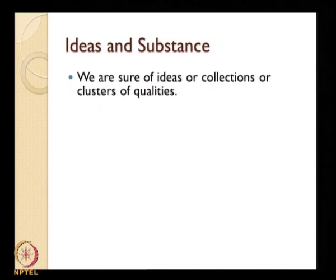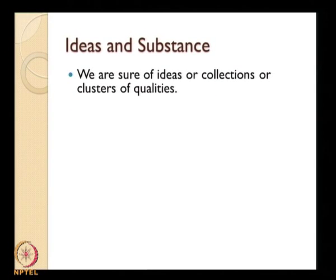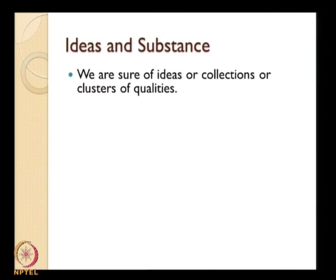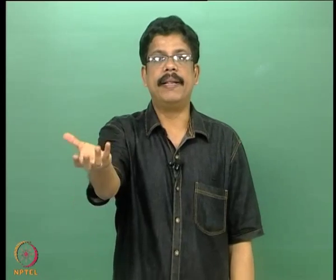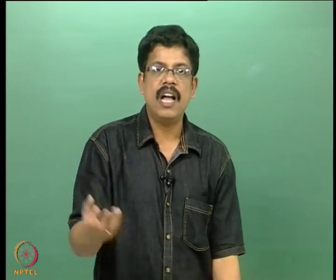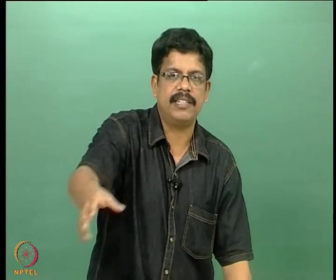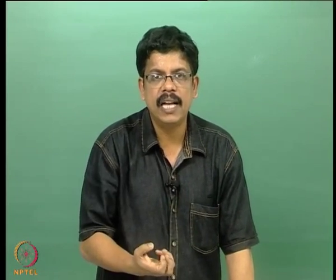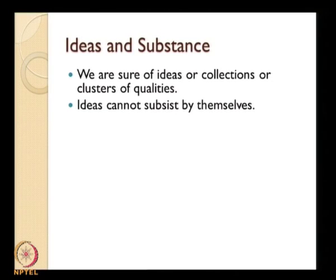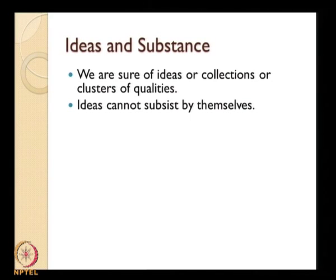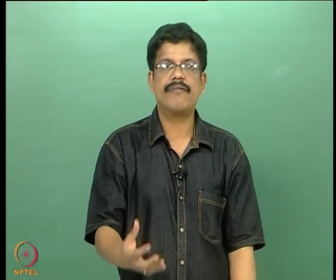Now let us come back to ideas and substance. We are sure of ideas, or collections or clusters of qualities — that is the only thing I am sure about. An apple, for example, is nothing but a cluster of qualities: red color, taste, smell, and so on. Putting them together I create a complex idea, the idea of an apple. Ideas cannot subsist by themselves — I need to explain this once again in this context, because there is a very important concept to be discussed: the notion of substance. It is originated from the assumption that ideas cannot subsist by themselves.